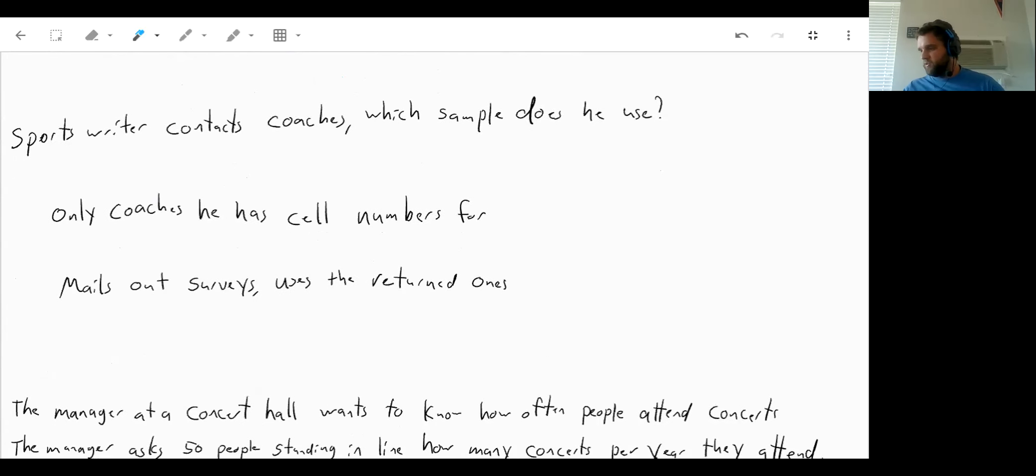So a sports writer wants to survey college baseball coaches about whether they think wooden bats should be mandatory throughout college baseball. We have two different types of samples that this sports writer tried. The first, the sports writer contacts only the coaches that he has cell phone numbers for. What type of sample is this?